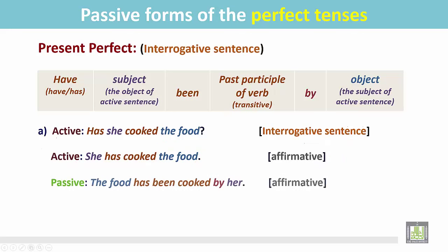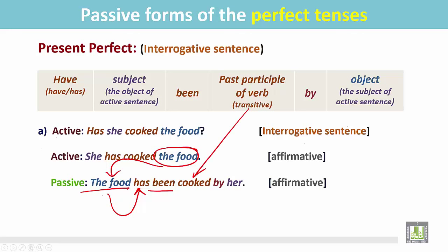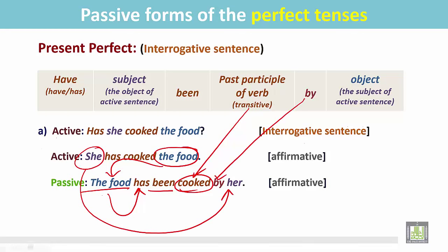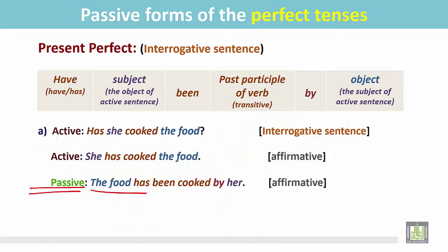In the passive sentence, the object of the active sentence becomes the subject: 'the food'. It is a singular noun, so it should be followed by 'has' and then 'been'. After that, the transitive verb is in the past participle form — 'cooked' — followed by the preposition 'by', and the subject of the active sentence becomes the object in the passive. The result is: 'The food has been cooked by her', and it is in the affirmative form as a statement.